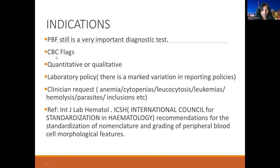These are different indications for peripheral blood film review. There can be CBC flags — those flags can be quantitative or qualitative — and each lab, depending upon those flags, has different policies, with marked variation in reporting policies. Or sometimes we get a request from the clinicians depending on the clinical picture: anemia, cytopenia, leukocytosis, leukemia, hemolysis, or neutrophilia. We are living in an era of molecular and very advanced technology testing, but peripheral blood film is still a very important, inexpensive, and rapid diagnostic tool.